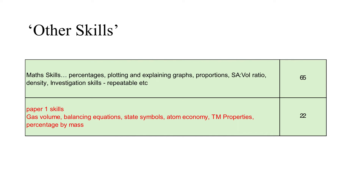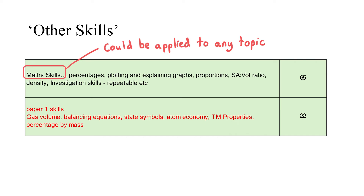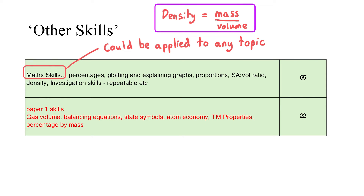The 'other skills' category refers to skills not directly tied to a particular topic but developed across the GCSE Chemistry course. The first strand is general math skills — approximately 20% of your paper will involve math. Some are explicitly linked to a topic, like calculating an RF value, while others are broader, such as calculating a percentage, plotting or explaining a graph, working with proportions like surface area to volume ratio, calculations using density, and general investigative skills such as repeatability and reproducibility.